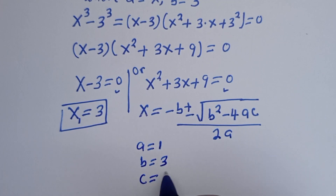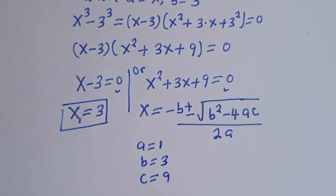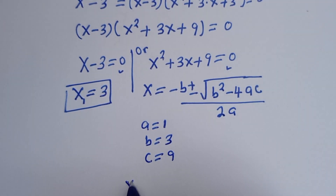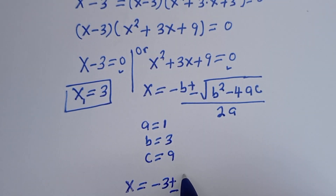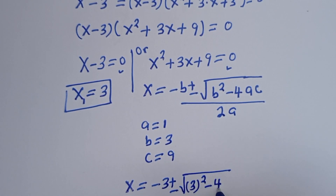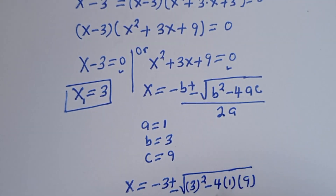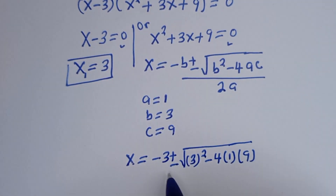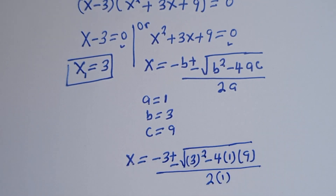...and c equals 9. Now let's substitute: s equals minus 3 plus or minus square root of 3² minus 4 times 1 times 9, divided by 2 times 1.